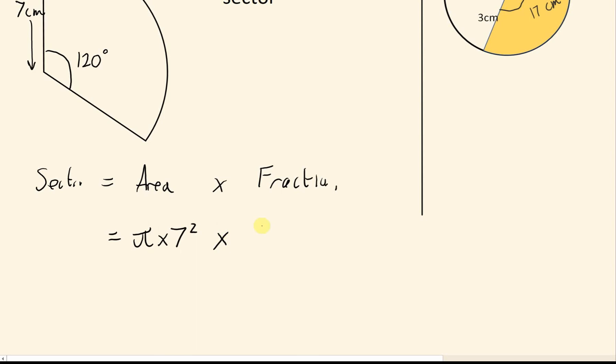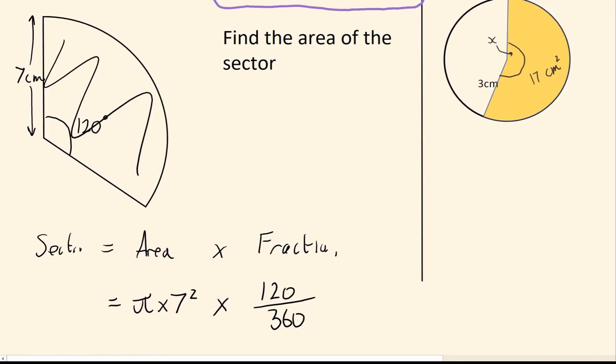And the fractional circle we have, again, that's based on how many degrees we have. In this case, it's 120 out of 360. To the calculator, that will give you this area of the sector here.